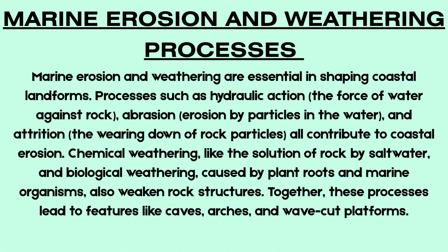Marine Erosion and Weathering Processes. Coastal landscapes are shaped by a combination of marine erosion, weathering and mass movement. Marine erosion includes four key processes. Hydraulic action occurs when waves force air into cracks in the rock, creating pressure that weakens and eventually breaks apart the rock. Abrasion involves sediment carried by waves grinding against the cliff face, wearing it down over time. Attrition takes place when rocks and pebbles collide with each other in the surf zone, gradually breaking into smaller and smoother particles. Corrosion, also known as solution, is when weak acids in seawater dissolve soluble rocks such as limestone or chalk.